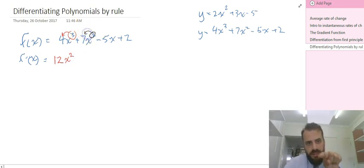Next term, take the 2, bring it out the front. 2 times 7 is 14, x, x to the power of 1, just x. Now this next one, it's kind of like x to the power of 1. Bring the 1 out the front, 1 times negative 5 is negative 5, and then the x disappears because it's x to the power of 0 now.